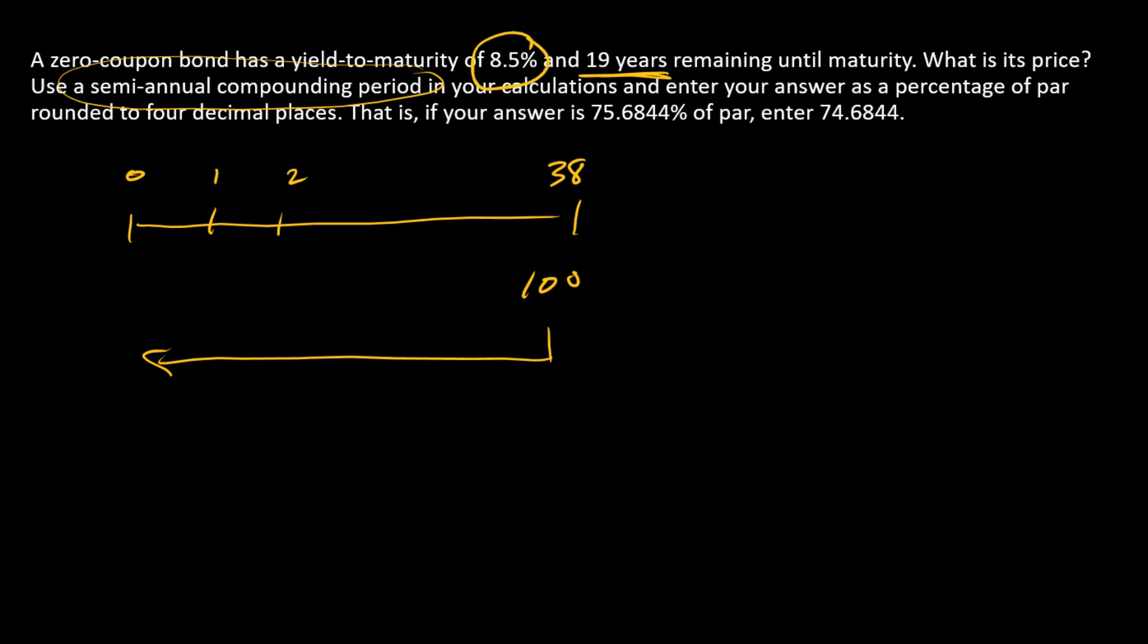We need a discount rate for this calculation, and so we're going to base that on the yield to maturity. Since the yield to maturity is annualized and we're going to a semiannual timeline, we need to divide that by 2. So we have a 4.25% discount rate, and we can calculate this price formulaically.